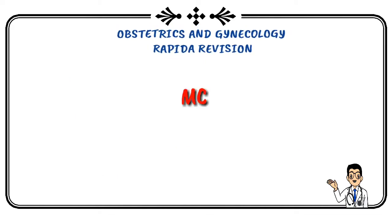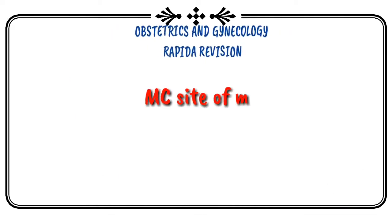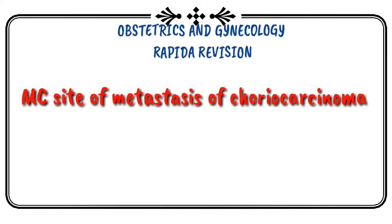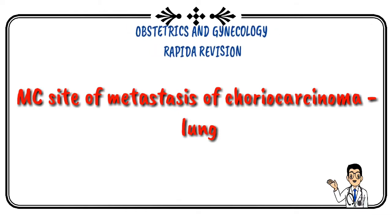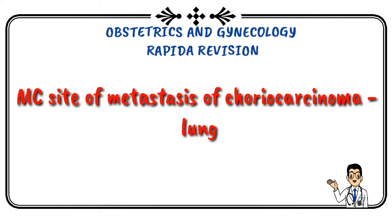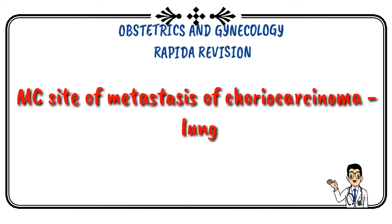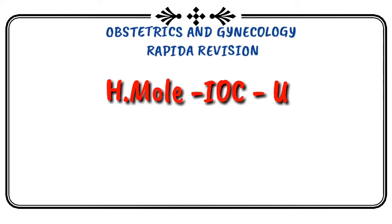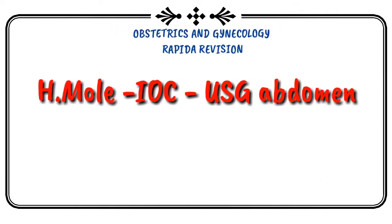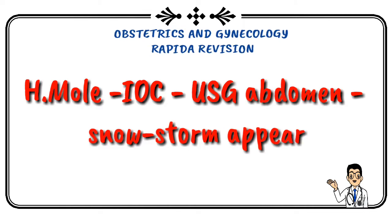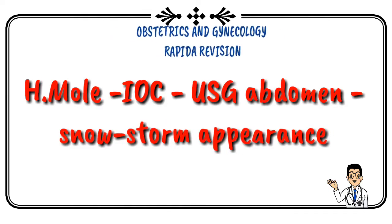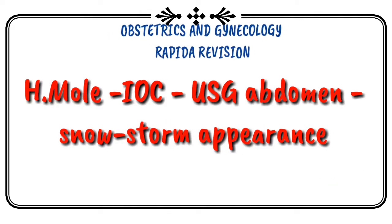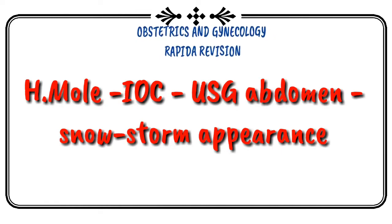Most common site of metastasis for choriocarcinoma is the lung. Investigation of choice for molar pregnancy is ultrasound abdomen showing snowstorm appearance; chest X-ray shows cannonball appearance.